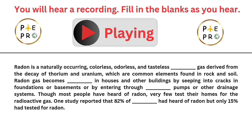Radon is a naturally occurring, colourless, odourless, and tasteless radioactive gas derived from the decay of thorium and uranium, which are common elements found in rock and soil. Radon gas becomes entrapped in houses and other buildings by seeping into cracks in foundations or basements, or by entering through sump pumps or other drainage systems.